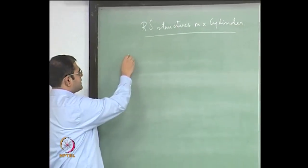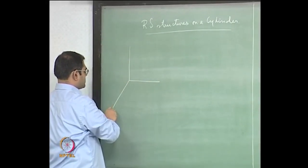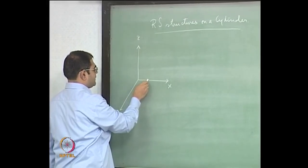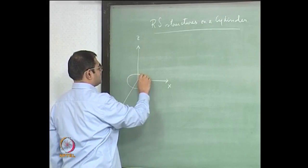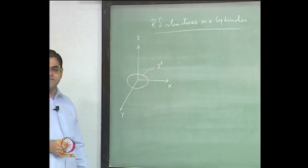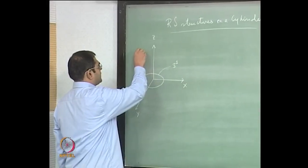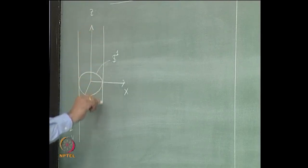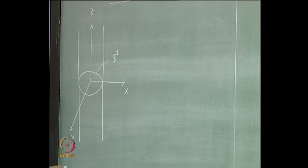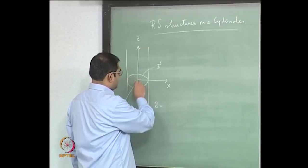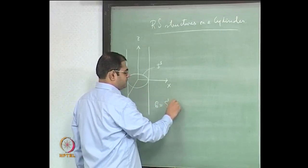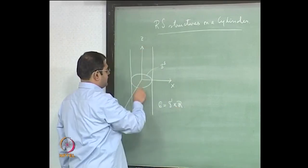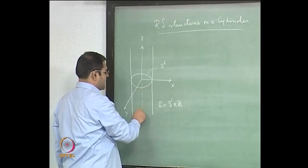We visualize the cylinder in 3-space as follows. We have the axis and here the unit circle, usually denoted by S¹, the 1-sphere. Then we have the cylinder with S¹ as base and with axis parallel to the z-axis. Let me call it script C. You can see that this is just S¹ × ℝ, where S¹ is the unit circle and ℝ refers to the z-axis.